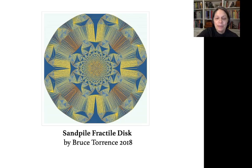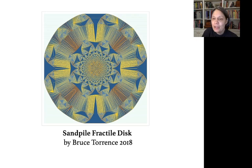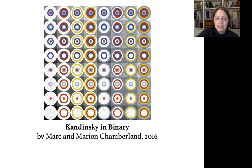This work by Bruce Torrance shows the complex patterns formed when a pile of sand spreads as grains are added and toppled according to simple rules. And this very effective yet simple composition by Mark and Marion Chamberlain portrays the numbers 0–63 in binary using color and shape.